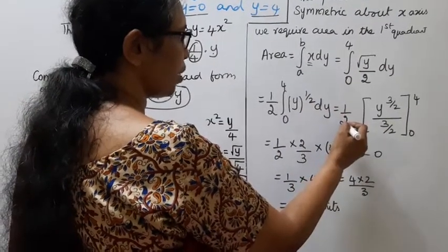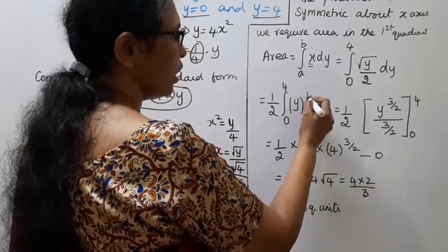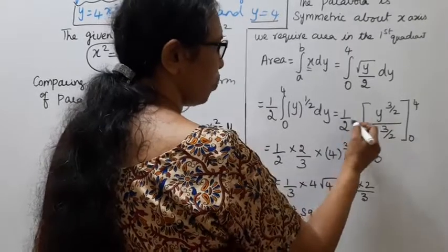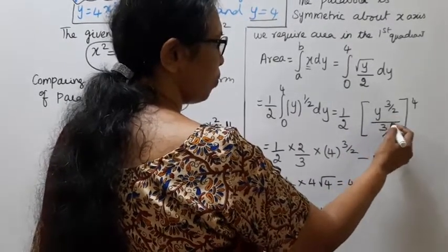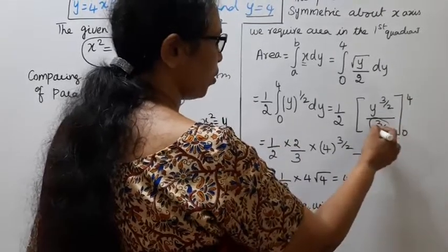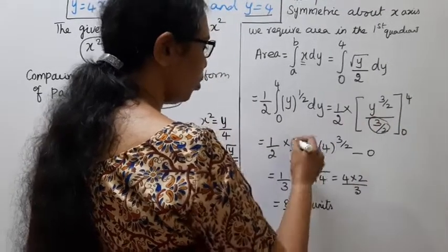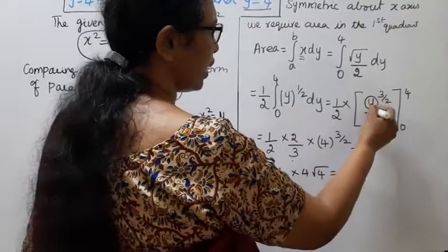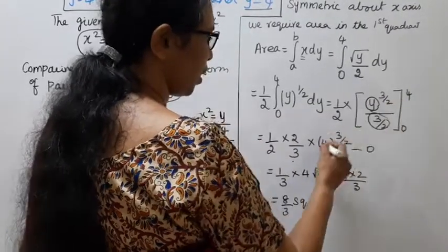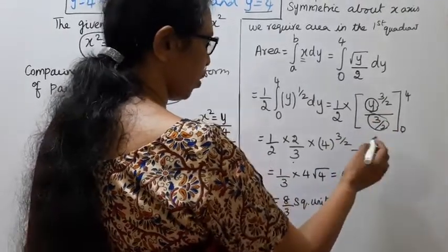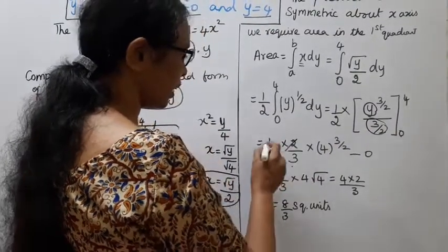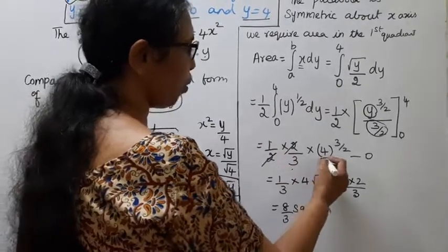The integral becomes 1 by 2 times the integral from 0 to 4 of y to the power half dy. Integrating, we get 1 by 2 times y to the power 3 by 2 divided by 3 by 2, which gives 1 by 2 times 2 by 3 times y to the power 3 by 2, evaluated from 0 to 4. Applying the upper limit minus lower limit: upper limit is 4 power 3 by 2, and lower limit gives 0.